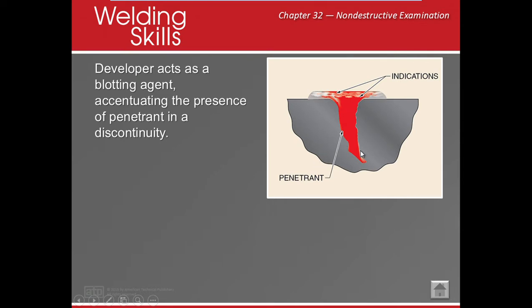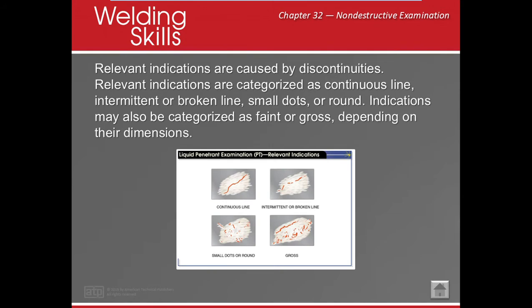The dye penetrant gets stuck in crevices, we wipe the top dry, apply the developer, and the developer sucks up any penetrant in the crack, giving us an indication. An important limitation: with dye penetrant, we can only see things that are open to the surface. We cannot see anything deep subsurface. So we'll detect surface cracks, porosity shown as small dots, and sometimes incomplete fusion — but the discontinuity must be open to the surface.